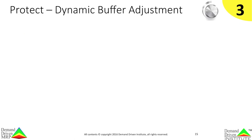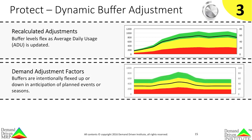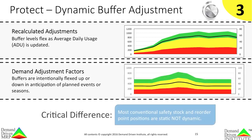The next DDMRP component is dynamic buffer adjustment. Once the initial buffer sizes are set, we know that things will change. DDMRP allows the buffers to flex up or down with either changes to actual usage or in anticipation of events or seasons. The critical difference here is that most safety stock and order point systems are static and not dynamic.